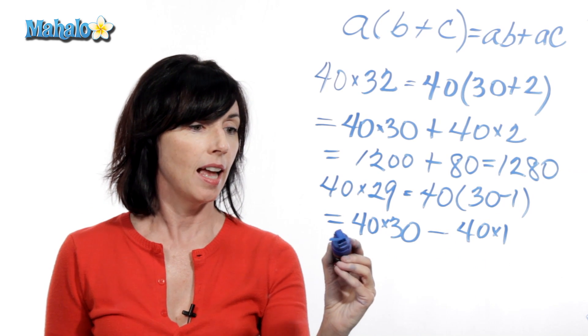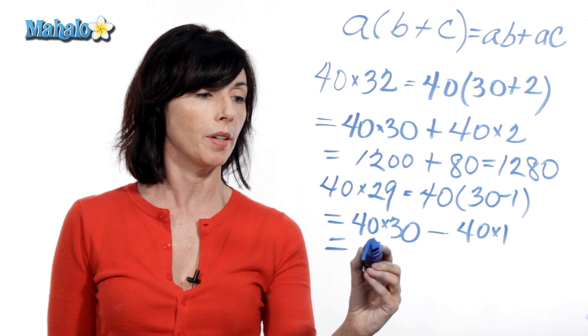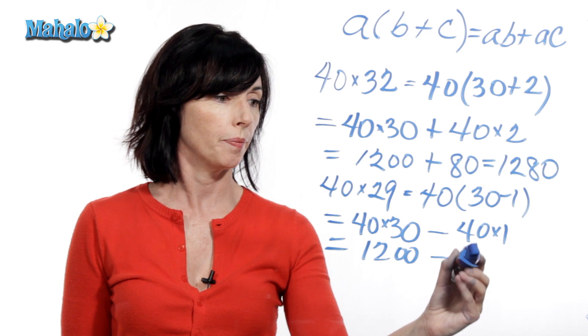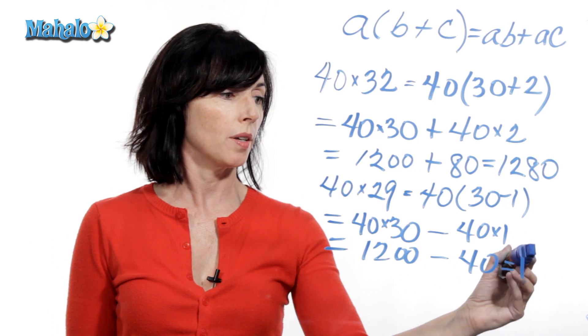Again, 40 times 30 is 1,200, minus 40 times 1 is just 40, and that's 1,160.